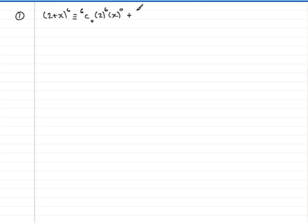And then it's plus for the second term, 6C1, then reduce the power on the 2 by 1, so that's now down to 2 to the power 5, and at the same time increase the power on the x by 1, so that's now x to the power 1.